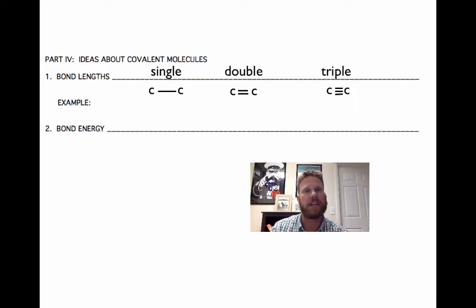In terms of the length of those bonds, in other words, the distance between the two atoms that are bonding together, the single bonds are the longest bonds, triple bonds are the shortest bonds.